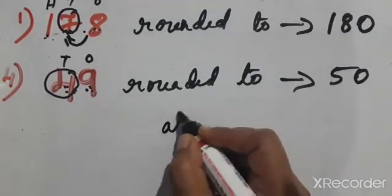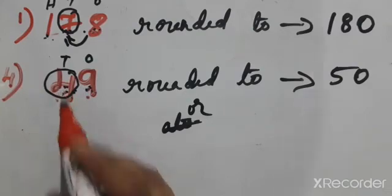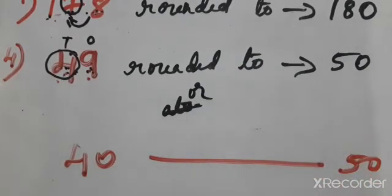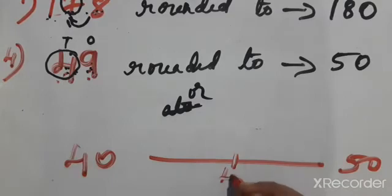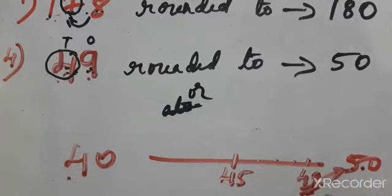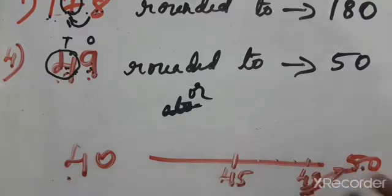One more method — the alternate method. We can try with the alternate method. Numbers between 40 and 50 for the number 49. The difference should be ten. We can try using this poem, this story, or this alternate method. When using this method, the number gap should be proper.